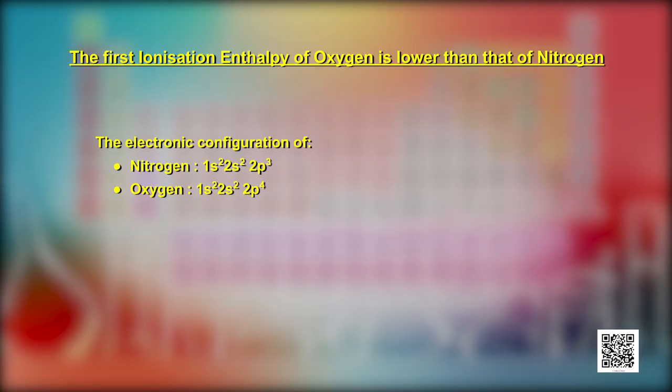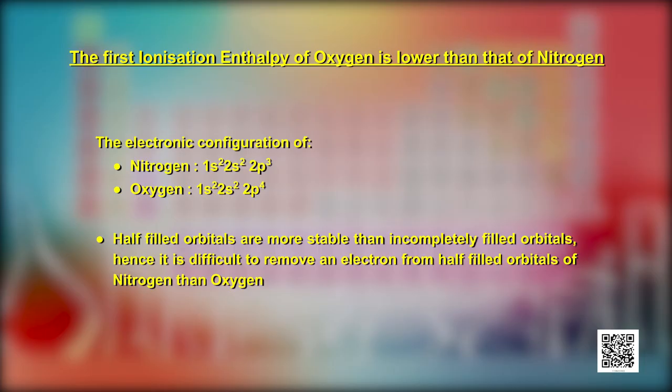Another exception is the smaller ionization enthalpy of oxygen compared to nitrogen. Nitrogen has configuration 1s², 2s², 2p³, whereas oxygen has configuration 1s², 2s², 2p⁴. This anomaly is due to the half-filled 2p orbital in nitrogen. Due to this stable configuration, nitrogen has less tendency to lose an electron and hence more energy is required. Students, can you figure out more anomalies in the periodic table?